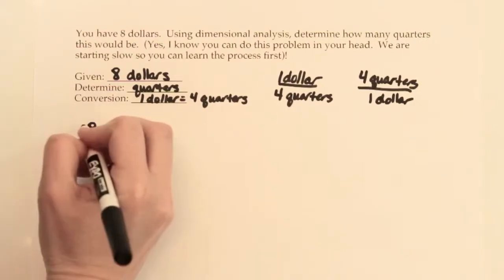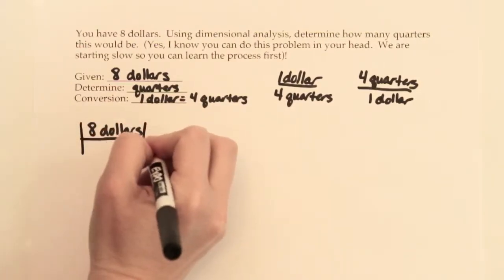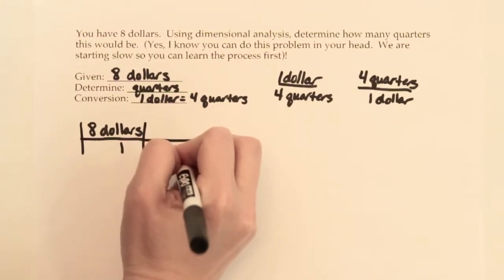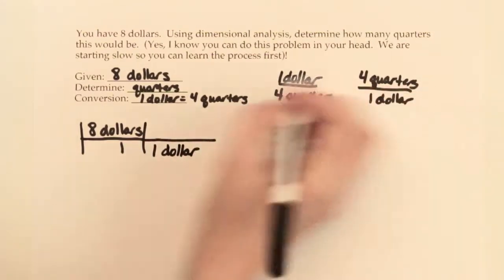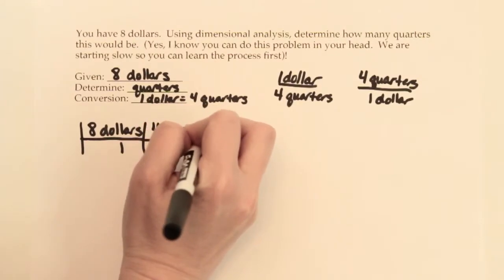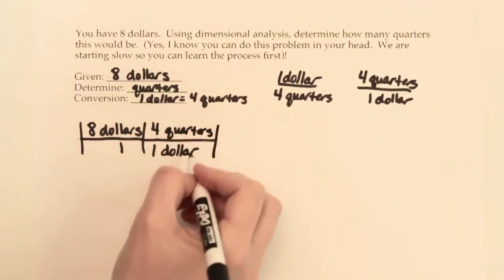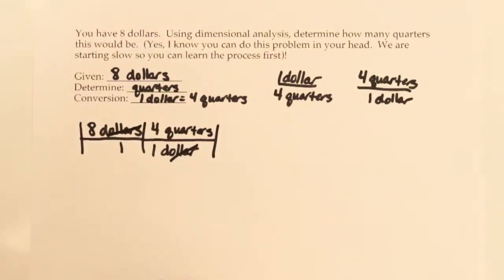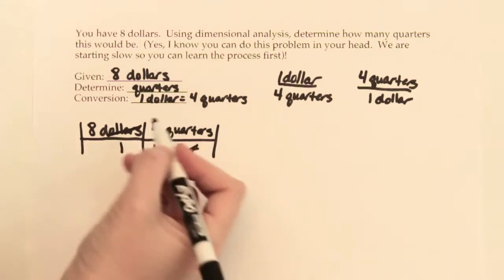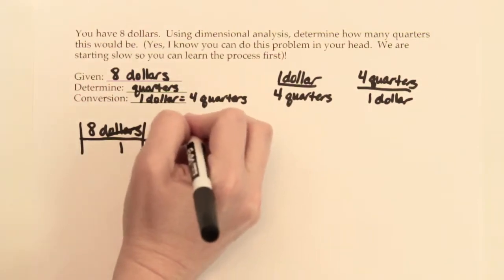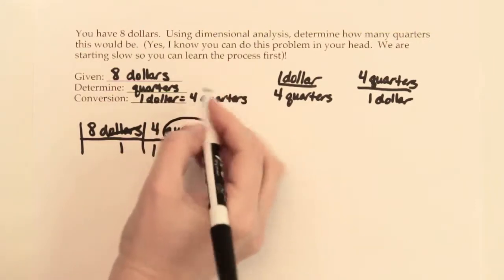I'm going to put this in a little goalpost-looking thing to keep our information organized. We want dollars on the bottom and quarters on the top. That way our words dollar and dollars can cancel out, kind of like in that 8 thirds times 3 fourths, the 3 and the 3 canceled out. Well, now we're at quarters, which is where we were trying to go, so you know you've hit the end of the problem.